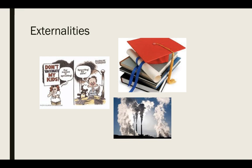We educate people because we want them to be more productive members of society, and by them being more productive members of society, everyone benefits from that — even though they might not bear any of the cost of the education. Now, if a product is giving off a negative externality, what the government will do to try and get them to stop is place a tax on that. So businesses that pollute, the government taxes them to try and get them to decrease the amount of pollution, or to increase the price for those who are buying that product so they bear more of the cost. To get rid of negative externalities, the government is going to tax a business.